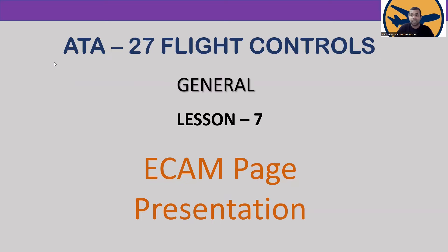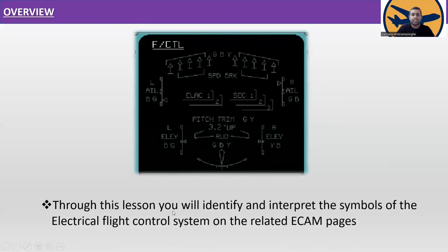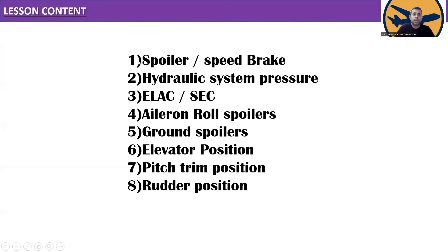This is the last lesson regarding ATA chapter 27 flight controls general — lesson number seven: ECAM page presentation. Through this lesson, you will identify and interpret the symbols of the electrical flight control system on the related ECAM page.